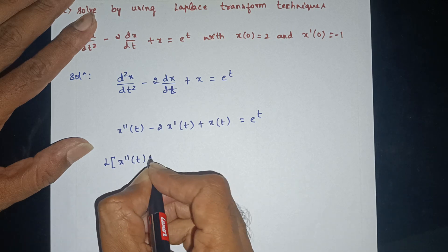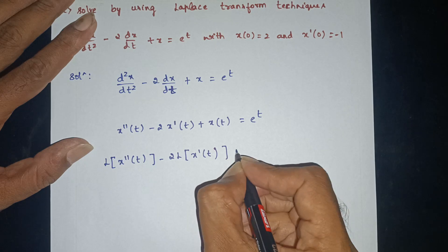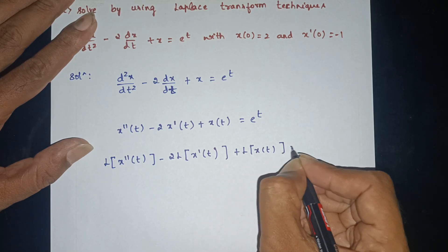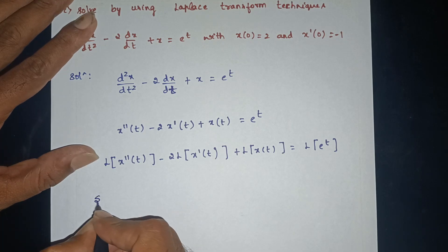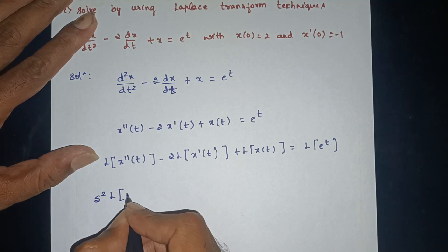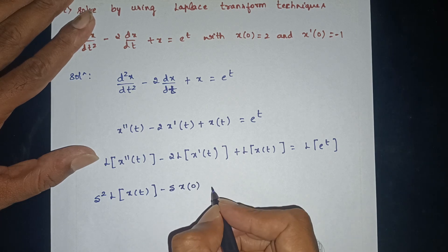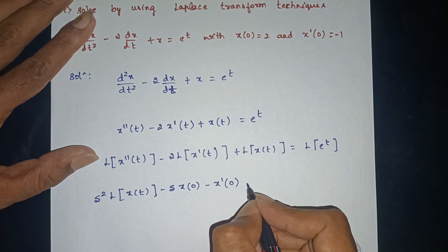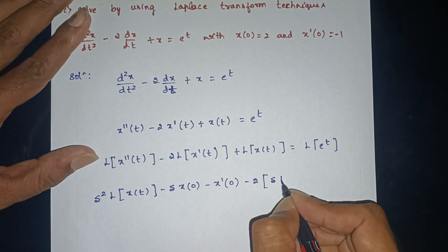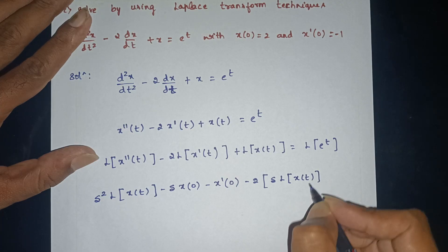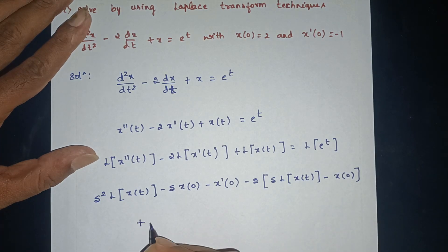Taking the Laplace transform: Laplace of x double dash of t, minus 2 into Laplace of x dash of t, plus Laplace of x of t, is equal to Laplace of e^(4t). Using the formula, Laplace of x dash involves s into Laplace of x of t minus x(0), and x'(0) is substituted.